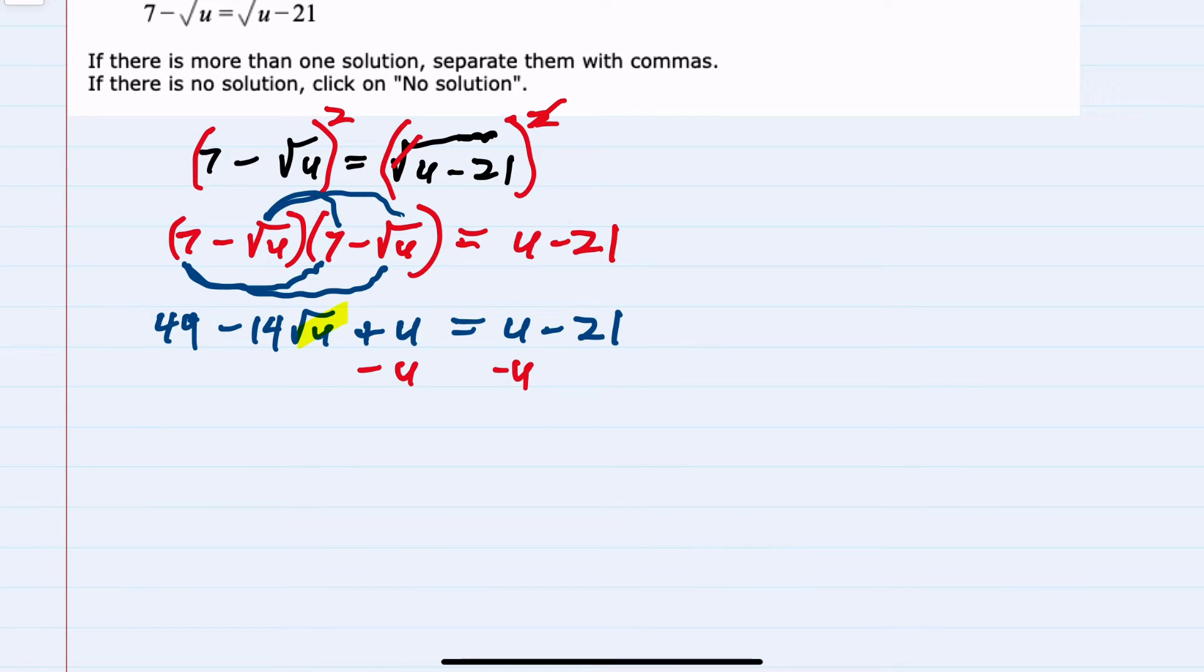Minus u minus u will cancel on the left-hand side, subtracting 49 from both sides. This cancels on the left-hand side, leaving me just the minus 14 square roots of u equals. On the right-hand side, the u's also cancel, and I'm left with a minus 70.